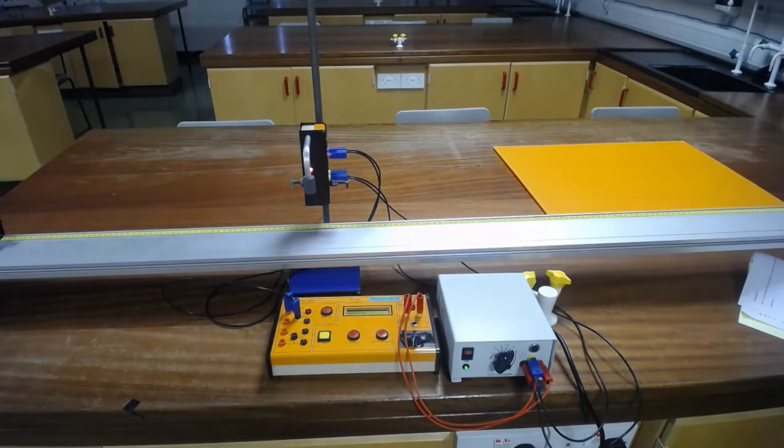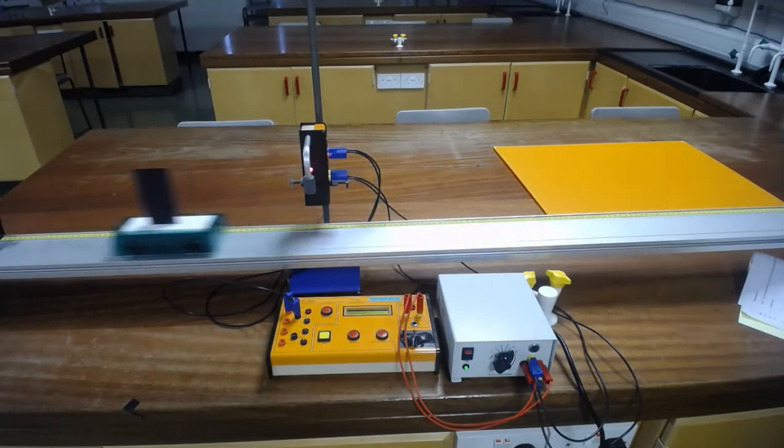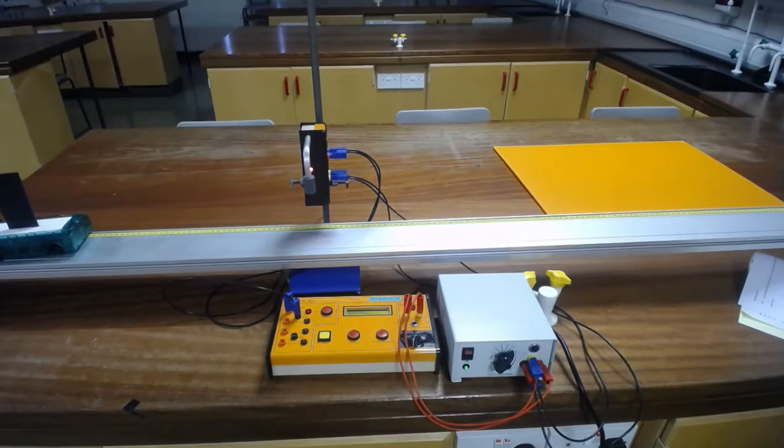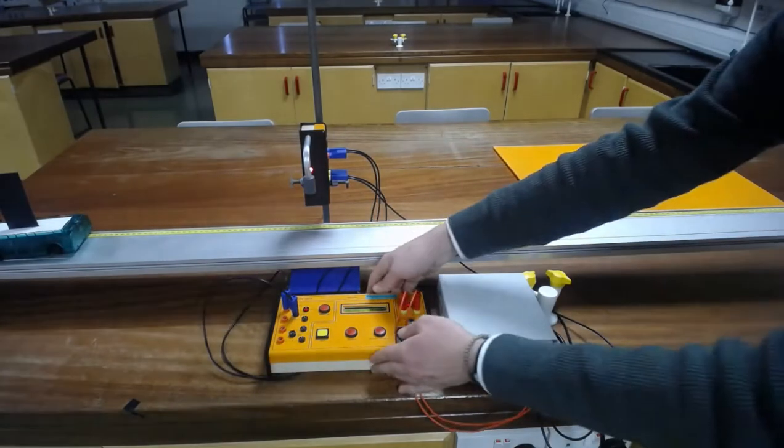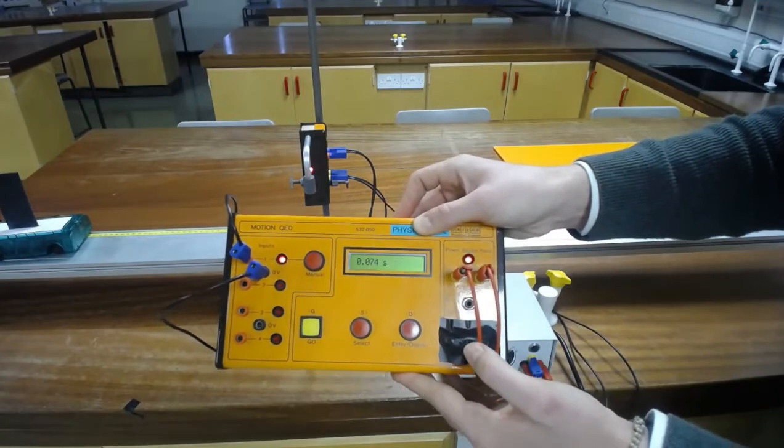With the light gate set at 150 centimeters from the top of the slope, I will release the power. Reading the computer, this took 0.074 seconds.